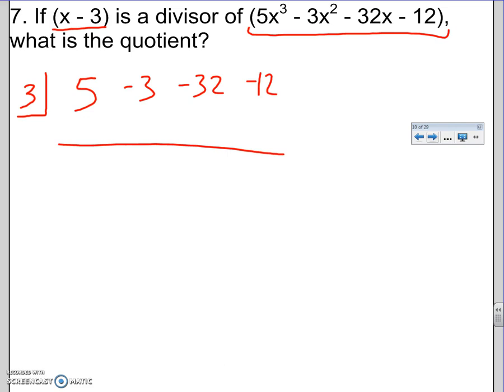I do the pattern. So you drop the first number. Then you multiply the number in the box. 5 times 3 is 15. Add downwards. That's positive 12. 12 times 3 is 36. Add down. That's positive 4. 4 times 3 is 12. Add down. That's 0. That's good. That's the remainder.